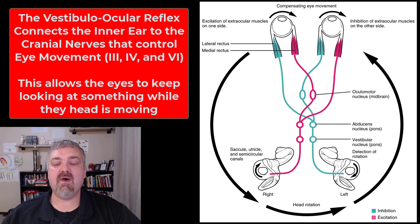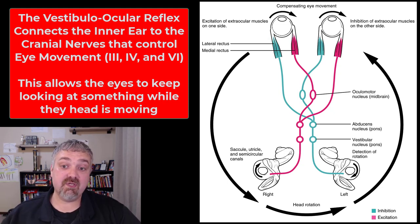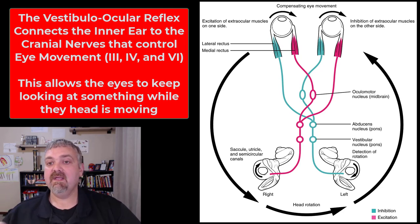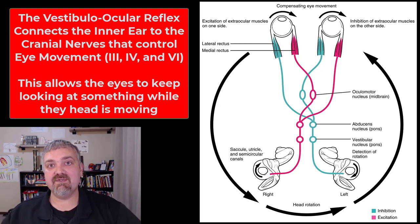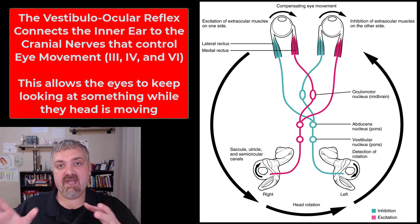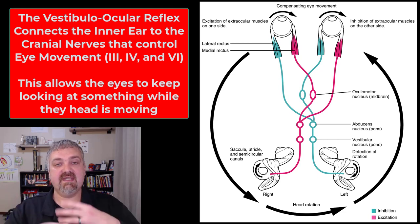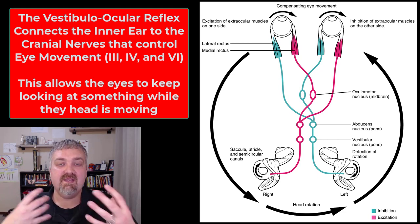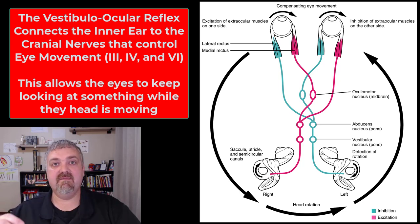Here's an example of what's called the vestibuloocular reflex. This is information from the vestibule and the semicircular canals that helps control eye movements — a neat example of how these systems work together. Eye movement is controlled by the oculomotor nerve, the trochlear nerve, and the abducens — cranial nerves 3, 4, and 6. So if you're moving while looking at something, your eyes move in the opposite direction to make sure you can still see it, maintaining a constant vision while you're moving.